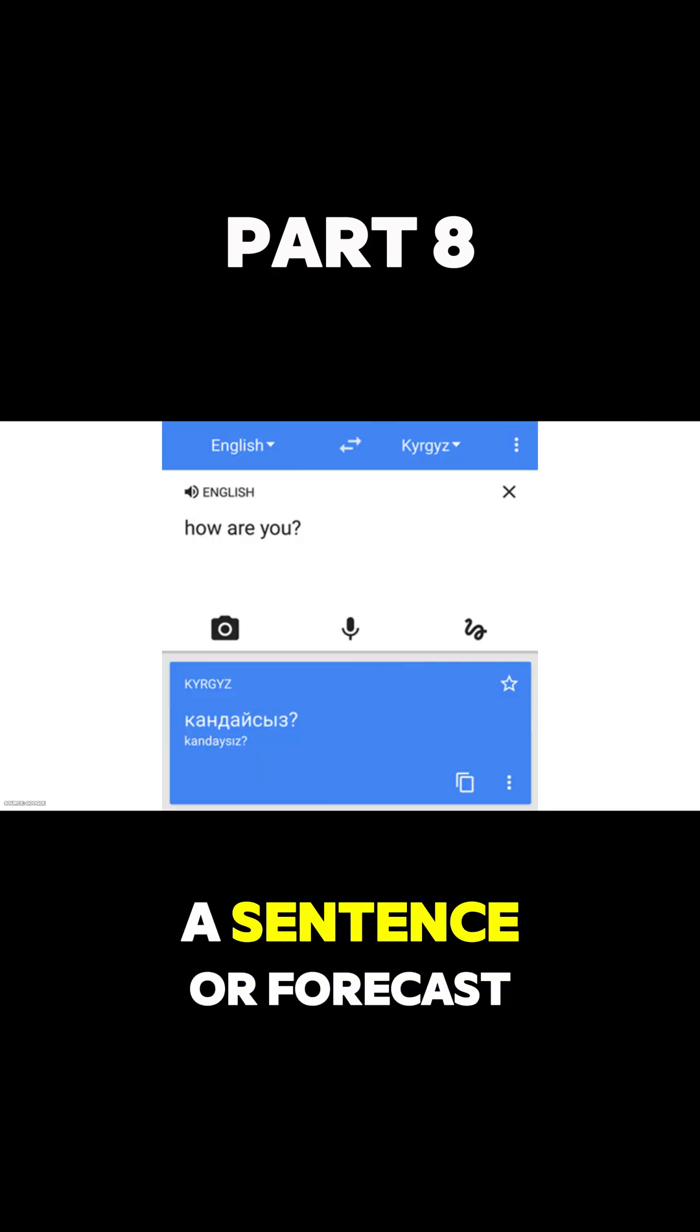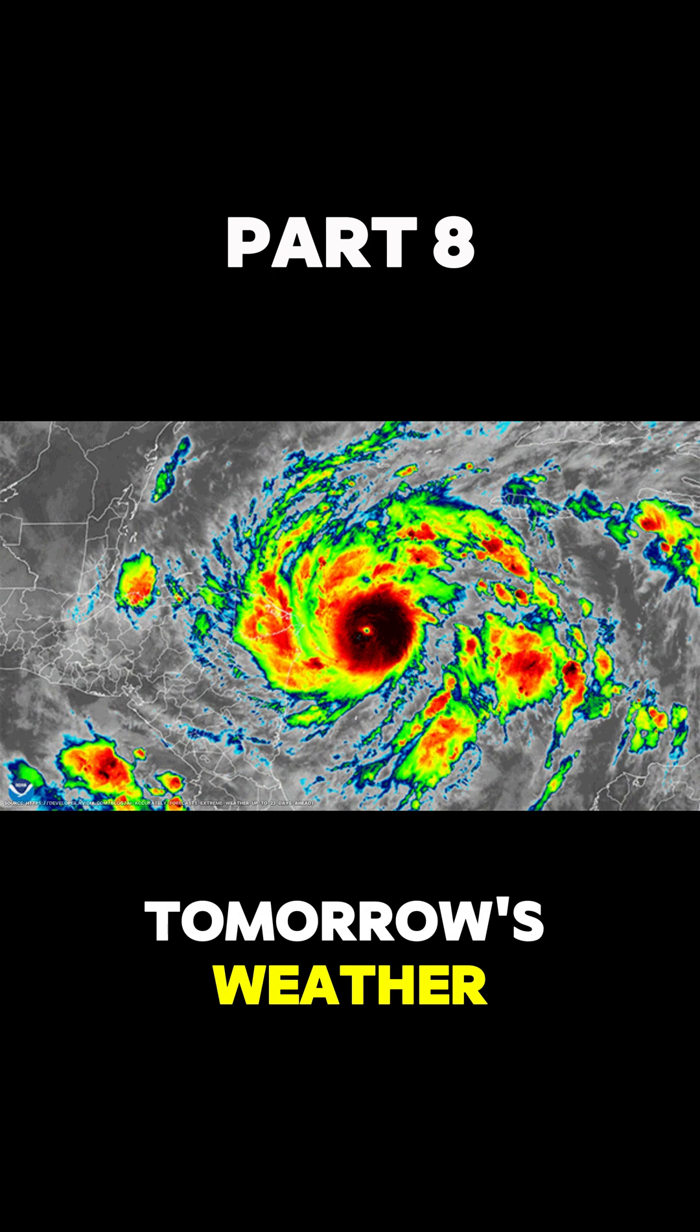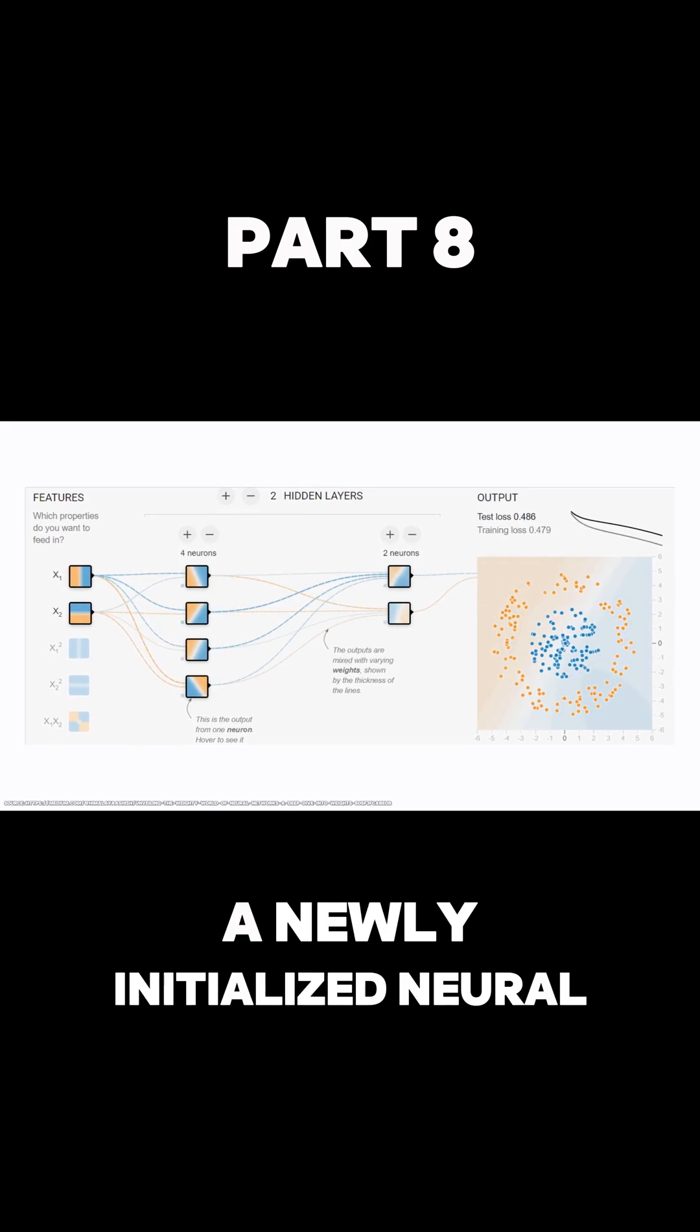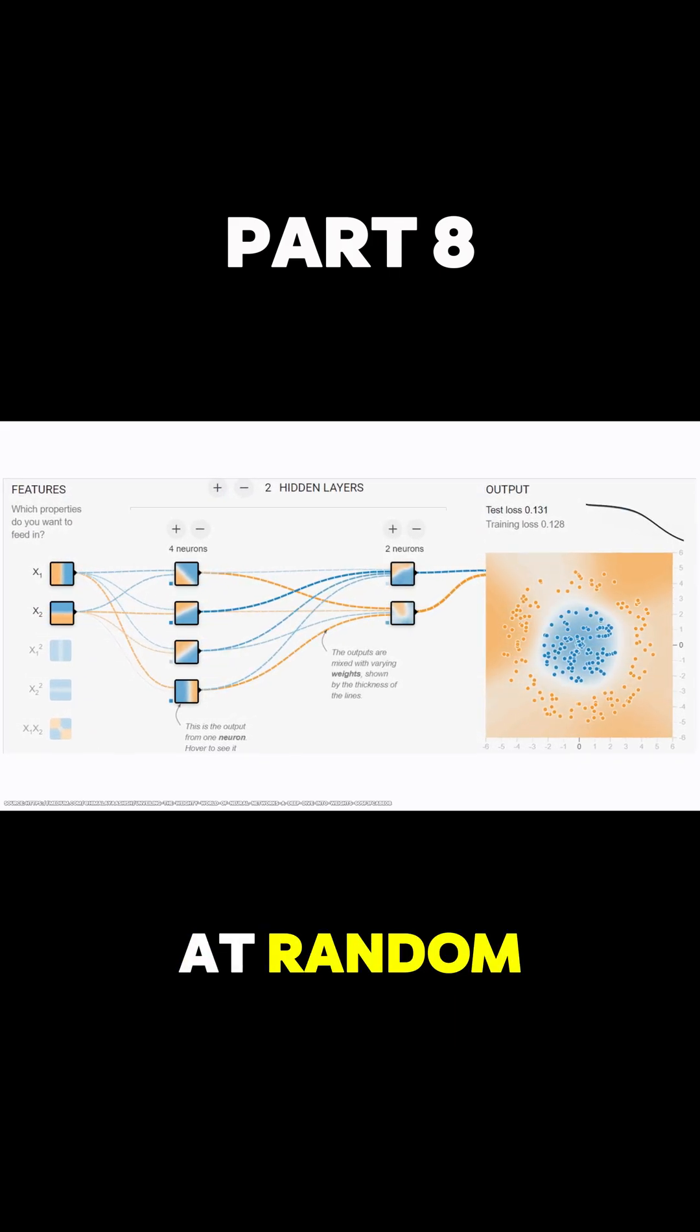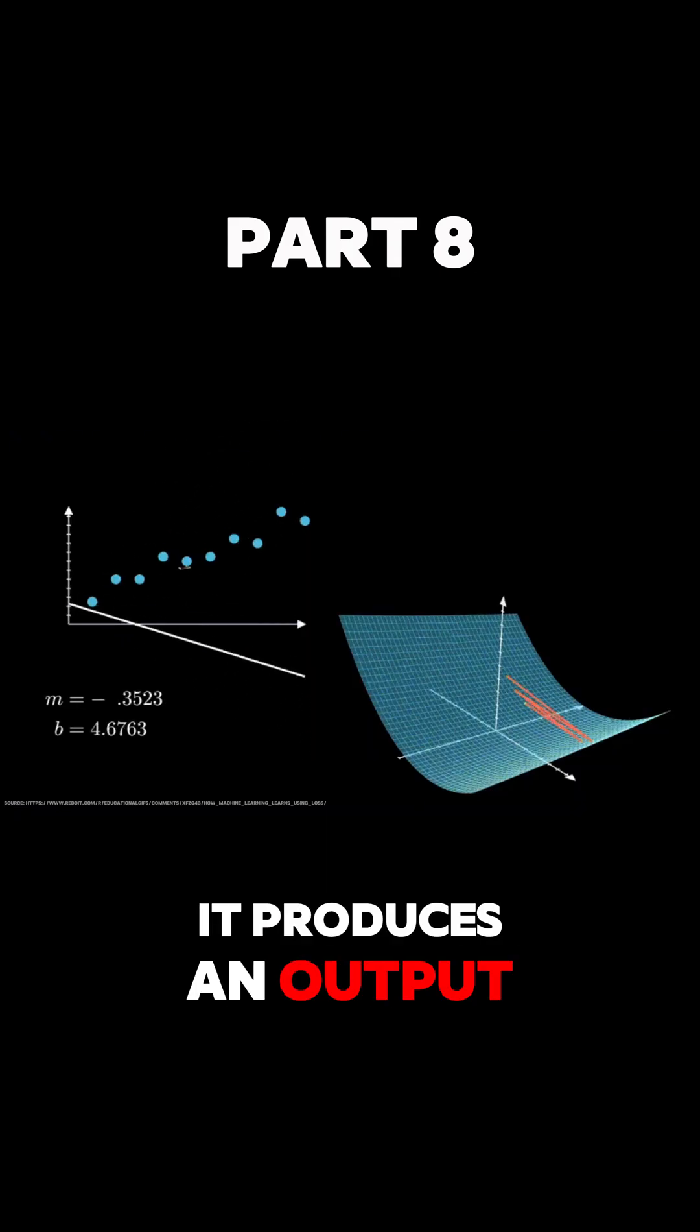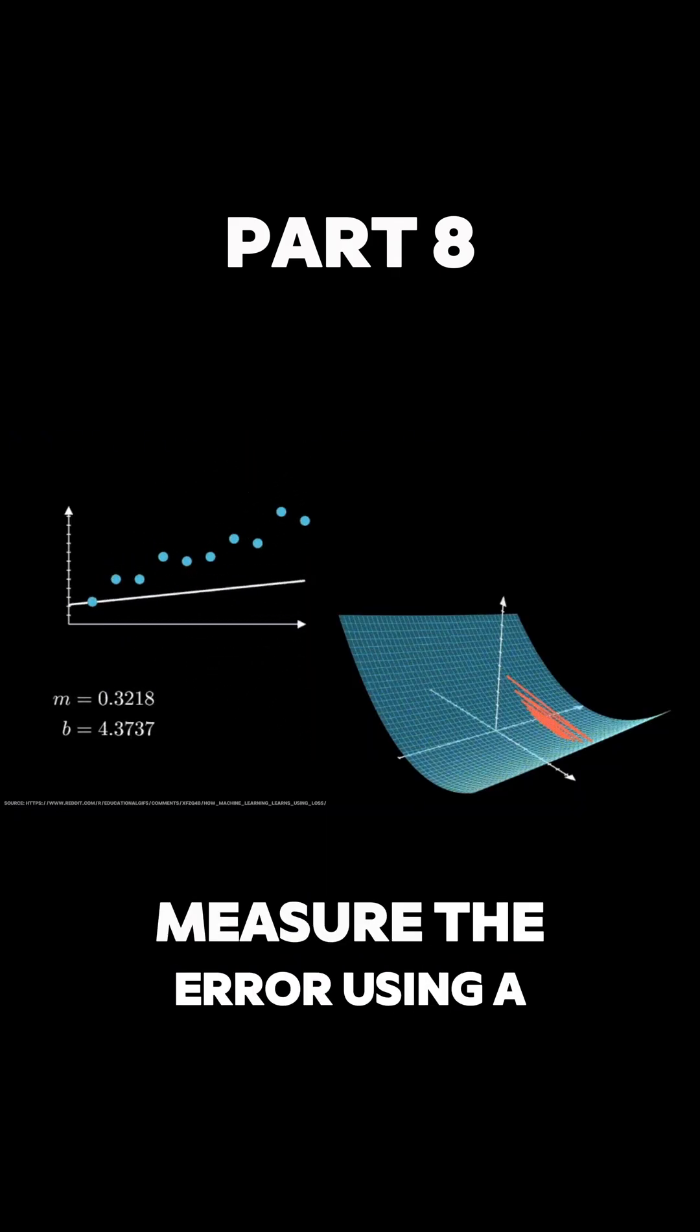But the first time you feed data into a newly initialized neural network, it's basically guessing at random. It produces an output, you compare it to the correct answer, and measure the error using a loss function.